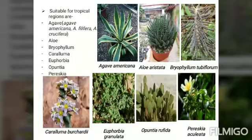The next tropical succulent is euphorbia, which belongs to the family Euphorbiaceae. The important species include Euphorbia fulgens and Euphorbia granulata. A picture of Euphorbia granulata is shown here.